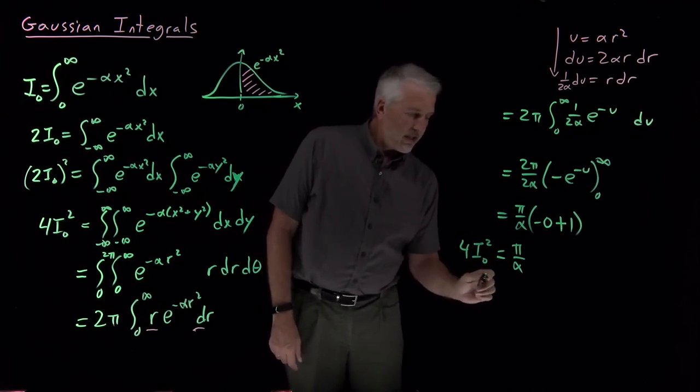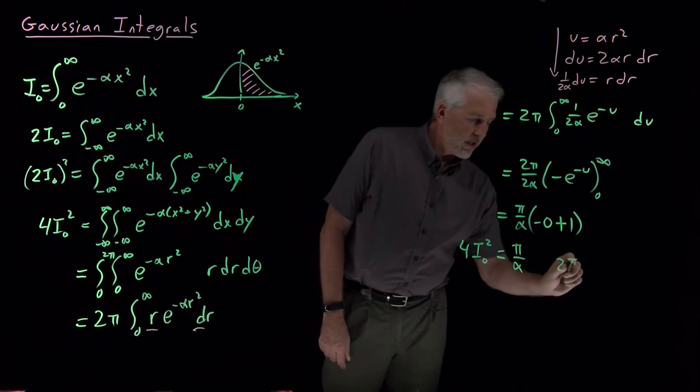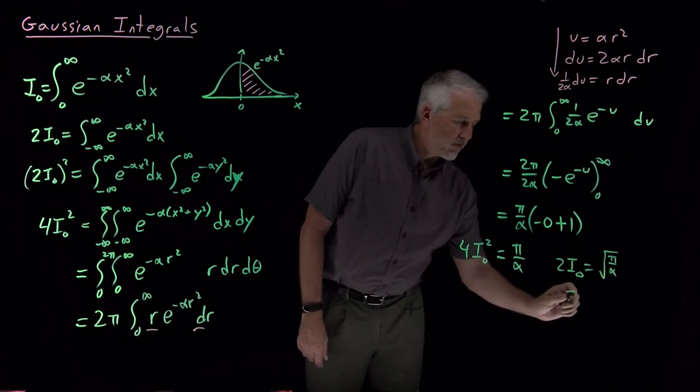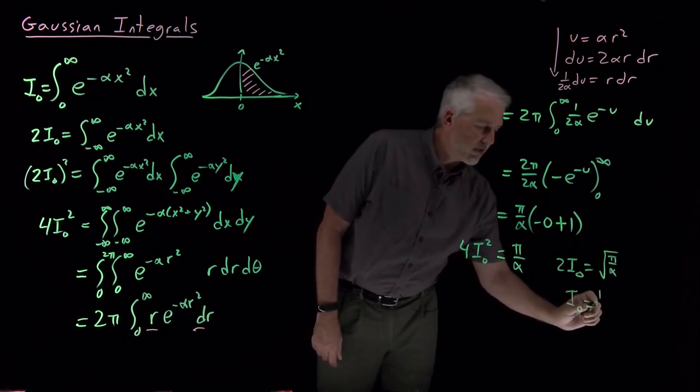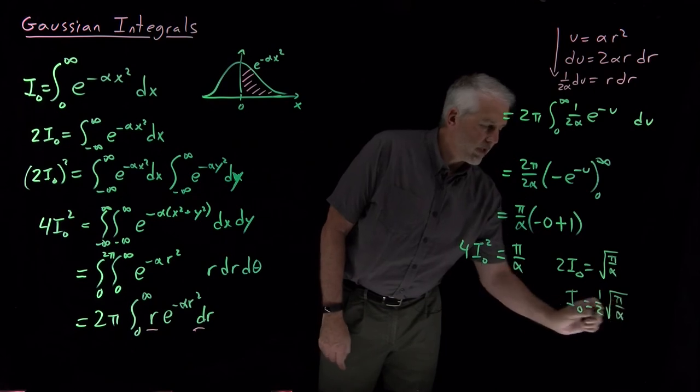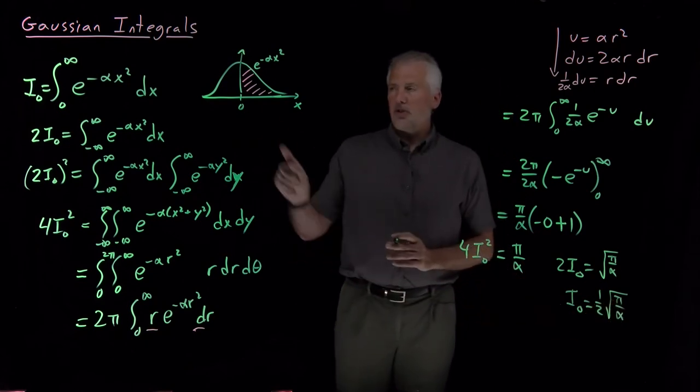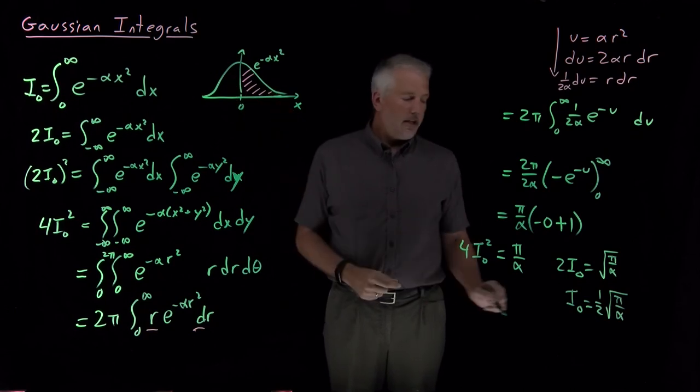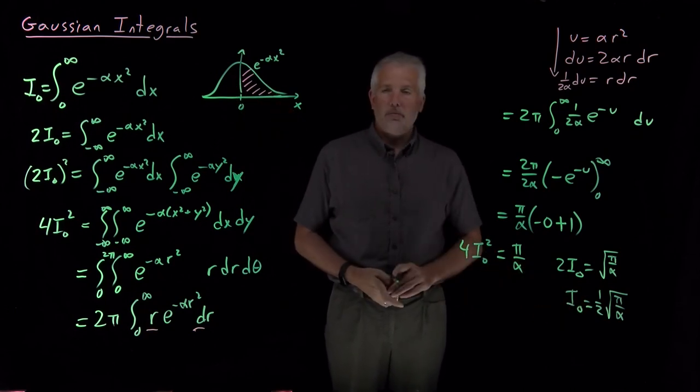Let's go ahead and take the square root, so the 2 I naught is going to be square root of pi over alpha. And if I move the 2 to the other side, I naught is going to turn out to be one half of the square root of pi over alpha. So that's the answer we were looking for: the area under the right hand side of this integral is I naught, one half square root of pi over alpha.